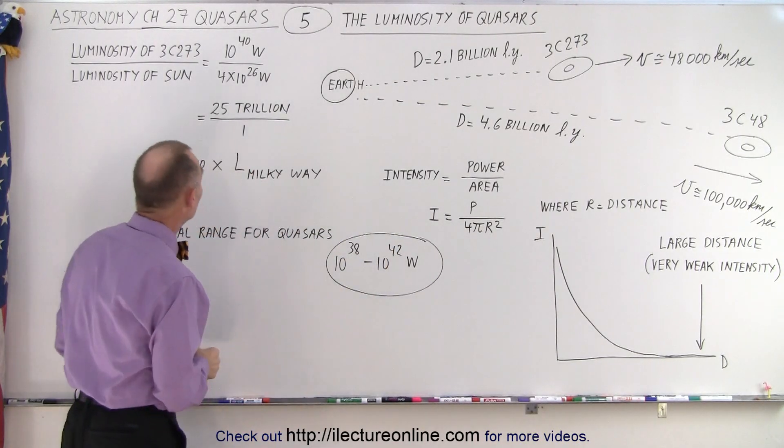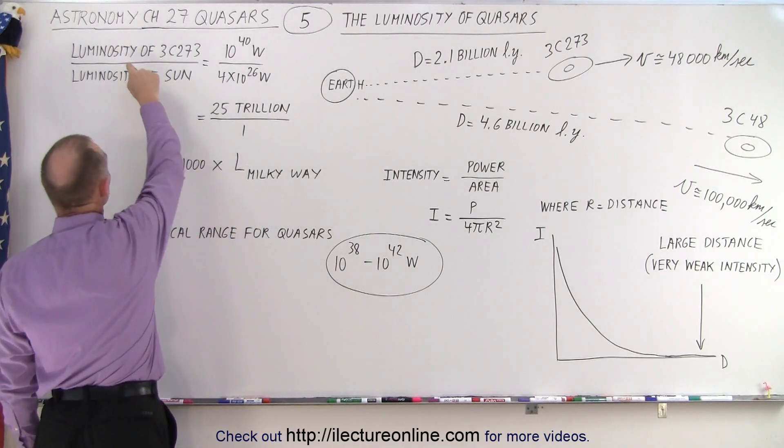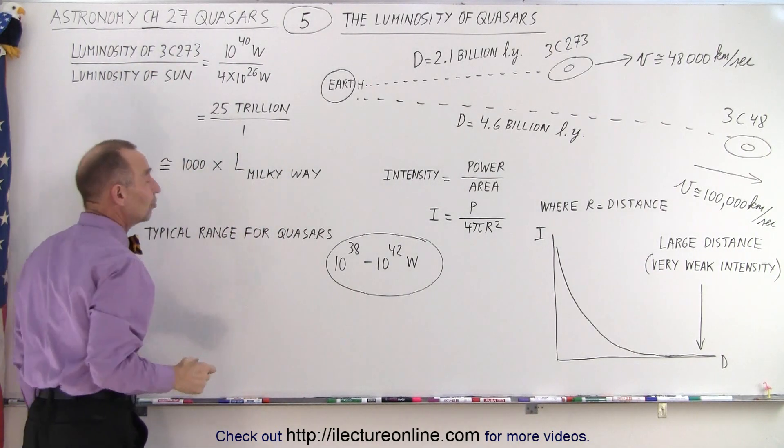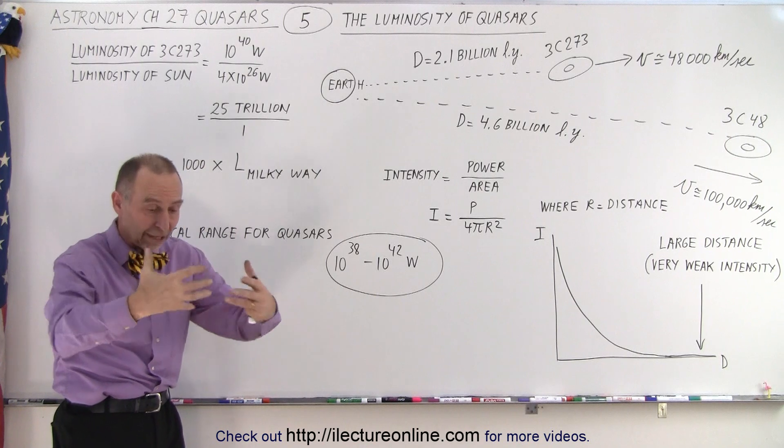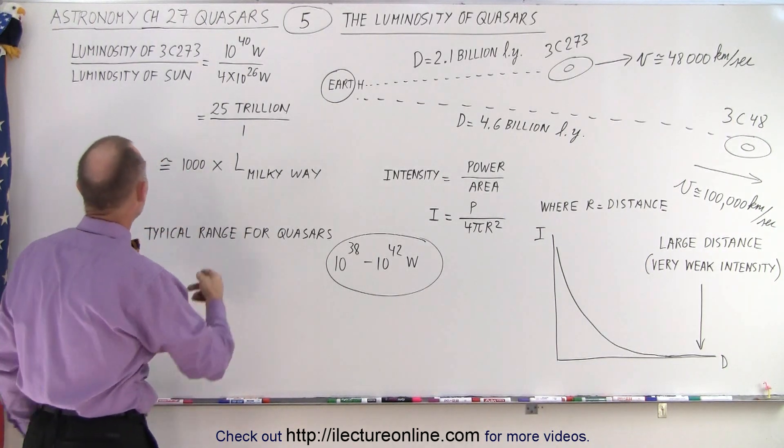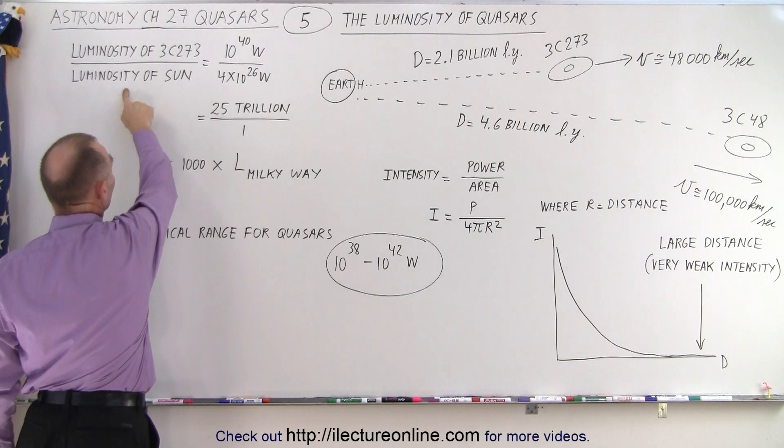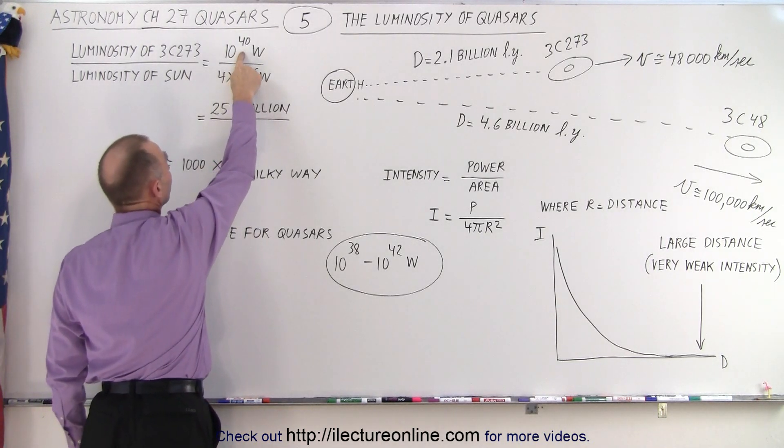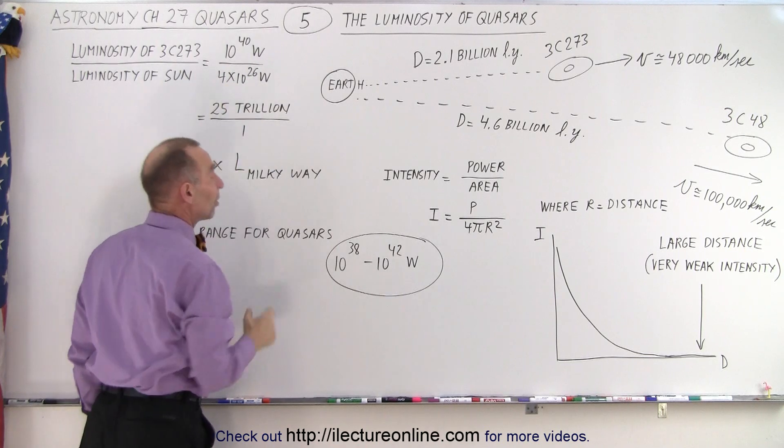So we began to calculate. And sure enough, when we compare the luminosity of 3C273, all the energy we're getting from that object, that quasar 3C273, and we compare it to the luminosity of the sun, notice 10 to the 40th watts compared to the output of the sun, which is about 4 times 10 to the 26th watts.